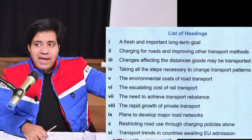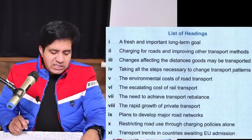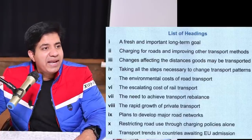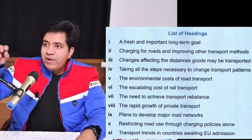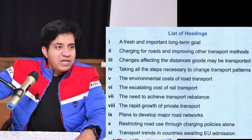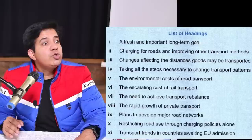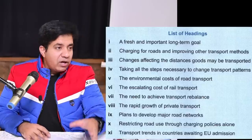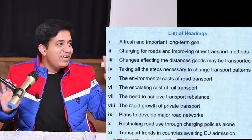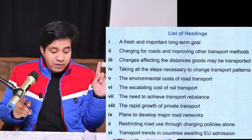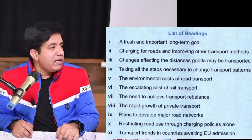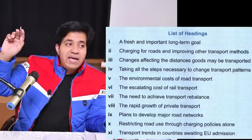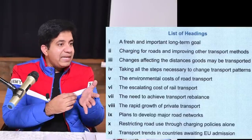Heading number one: 'A fresh and important long-term goal.' Fresh means new, important means crucial, long-term goal means 30-years or 25-years planning. So for long-term goal you will look for a number that suggests a long planning period. Also note: an example is given — paragraph F uses heading number seven — so cross out heading number seven from the list and skip paragraph F. You will not use a heading that is already given as an example.